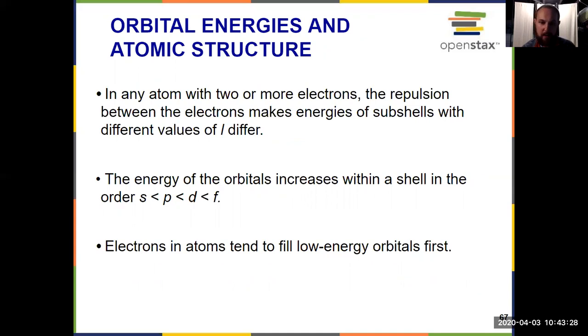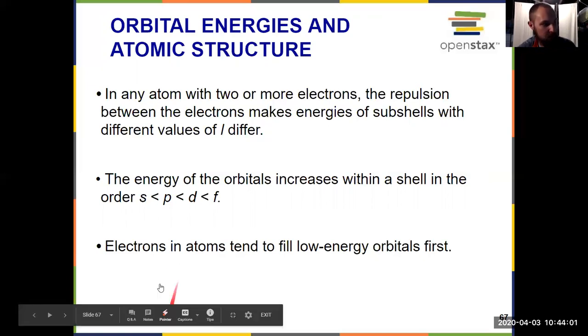So remember the S orbital has just that one orbital within the subshell, spherical shaped, it can hold two electrons. But everything else, the P, the D, and the F subshells, has additional orbitals. The P has three, the D has five, the F has seven. And because the electrons within those orbitals repel one another, that makes the higher value of L also a higher energy orbital, which is what we see right here.